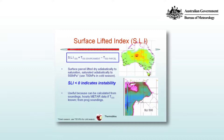This is done for summer, and in winter in a cooler environment we use the SLI to 700hPa. Because you can get thunderstorm convection happening in winter with negative SLIs at 700hPa, but not necessarily at 500hPa.